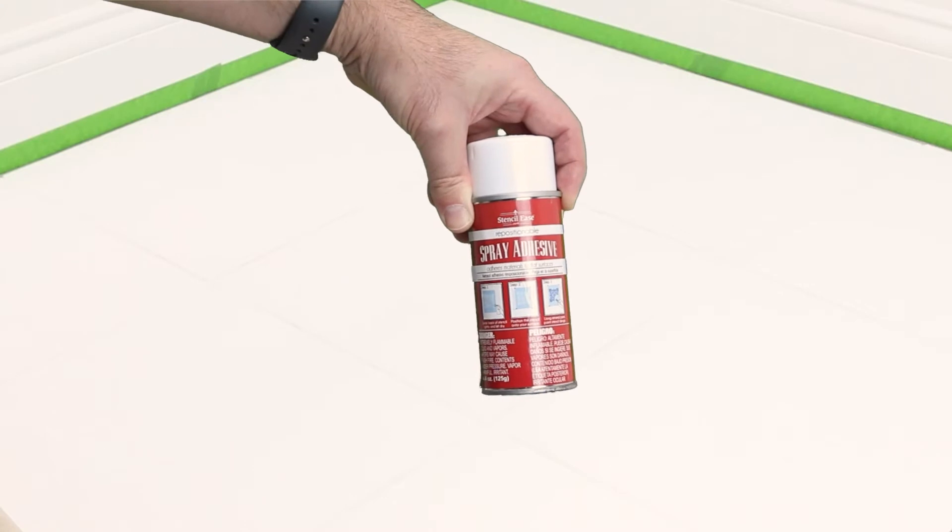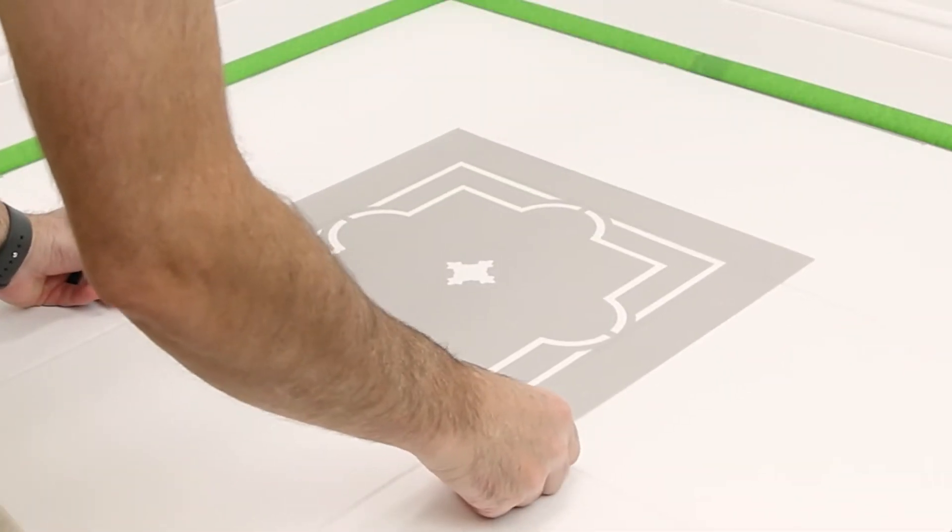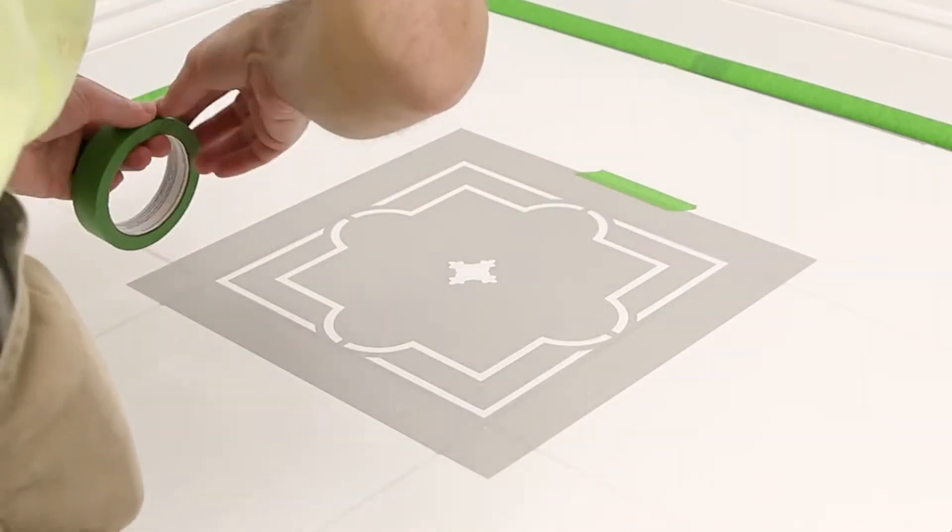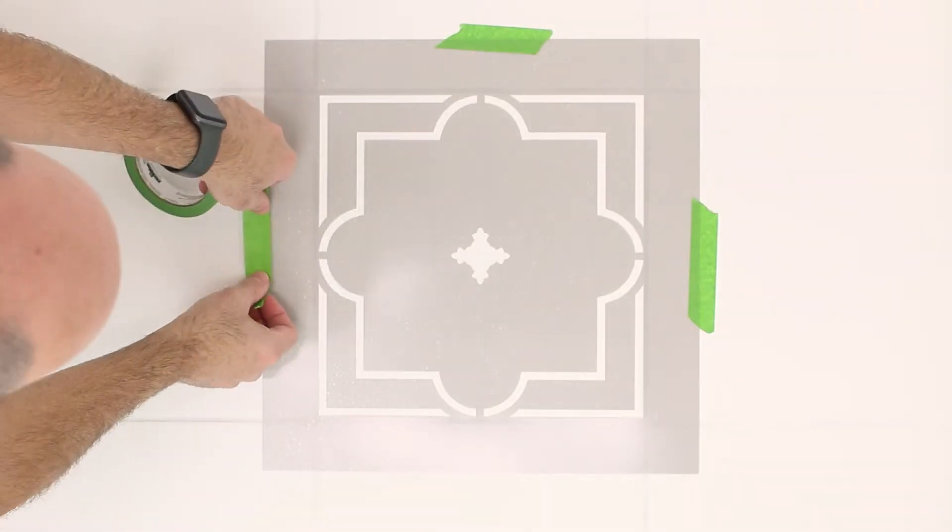Spray the backside of your stencil with repositionable spray adhesive and wait about 30 seconds before positioning. Add some pieces of FrogTape for extra security.